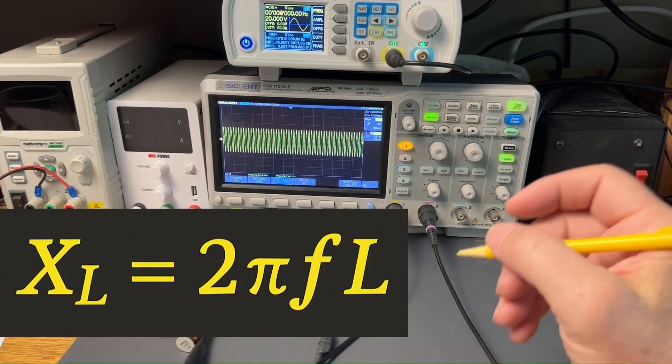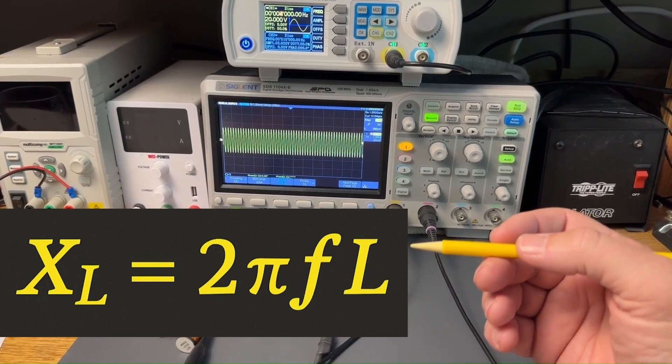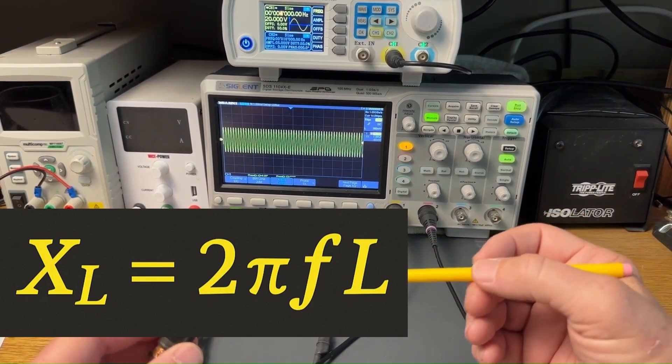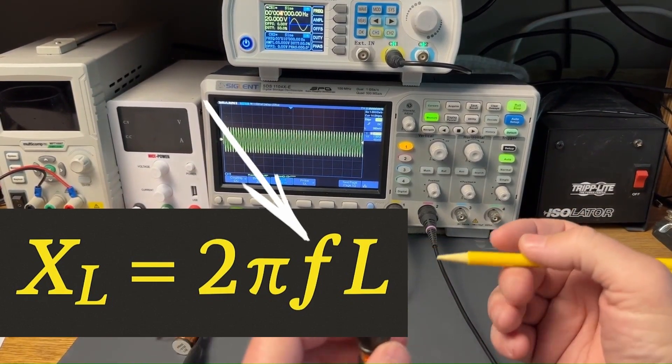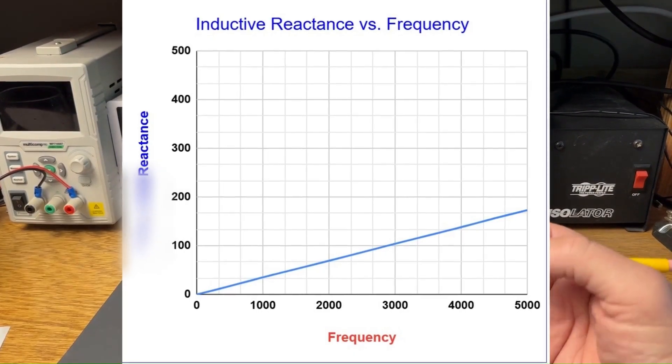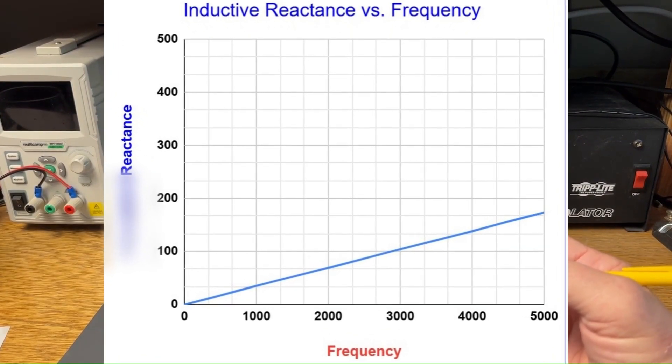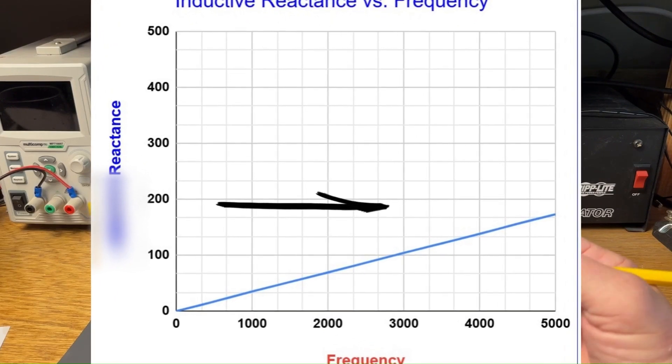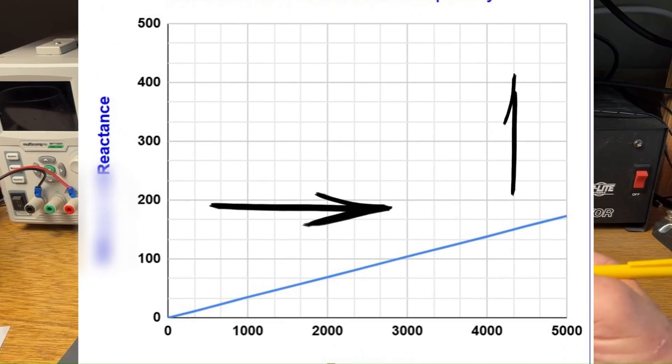This YouTube channel is about applied theory, so I'm not going to dig too deep into the formula of how this works, but as you can see, frequency is in the numerator of this formula, which is used to calculate inductive reactance. The result is this linear response here that illustrates that as you increase frequency, the ohms, or inductive reactance, of the inductor increases.